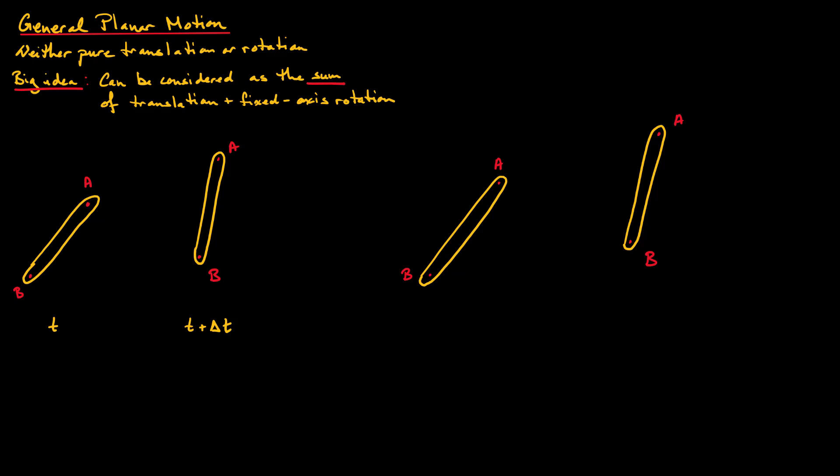Consider this random object at time t. We're going to look at two points on that object, points A and B. At time t plus delta t, the object is now at this new position. As we can see, it has both rotated and translated.